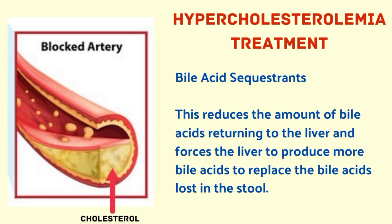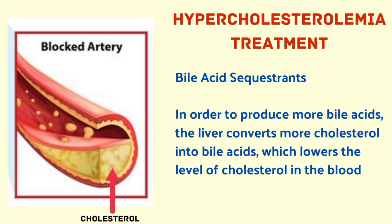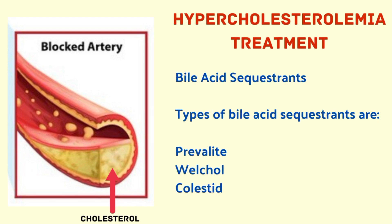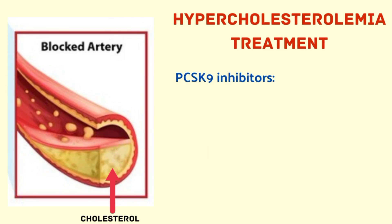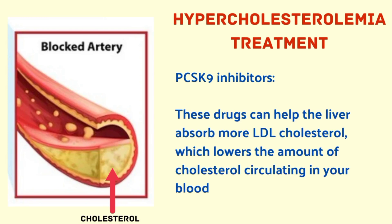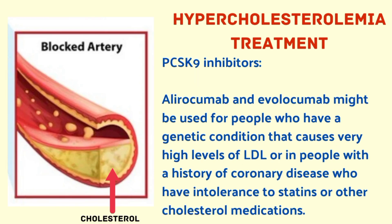This reduces the amount of bile acids returning to the liver, forcing it to produce more bile acids to replace those lost in stool. To produce more bile acids, the liver converts more cholesterol into bile acids, which lowers blood cholesterol levels. Types of bile acid sequestrants include Prevalite, Welchol, and Colestid. PCSK9 inhibitors help the liver absorb more LDL cholesterol, lowering the amount circulating in your blood. Alirocumab and evolocumab may be used for people with a genetic condition causing very high LDL or those with intolerance to statins.